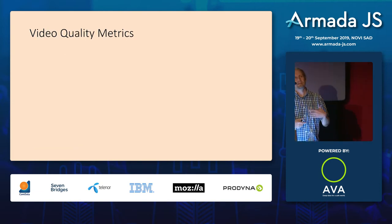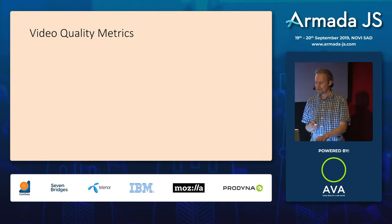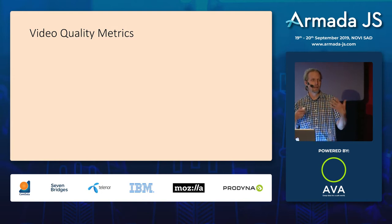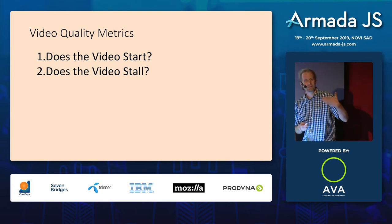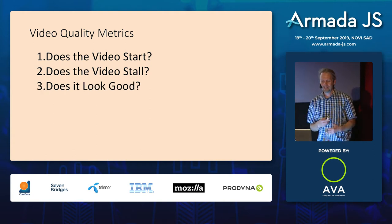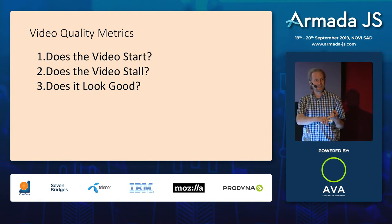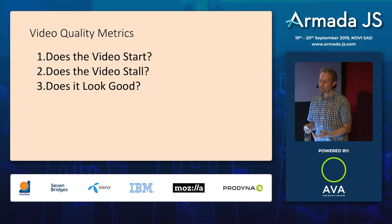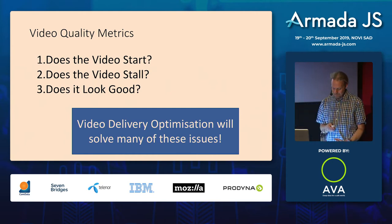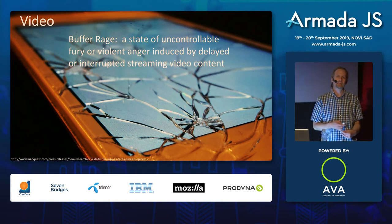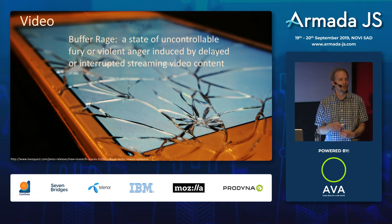There are three primary metrics for good video playback according to Conviva, one of the top analytics companies for video. First: did the video start? Second: did it stall? We all know that when a video stalls we get frustrated and sometimes stop watching. Third: did the video look good? My contention is that if we optimize videos for delivery, they'll download quickly, start quickly, probably won't stall, and if done right, will still look good.